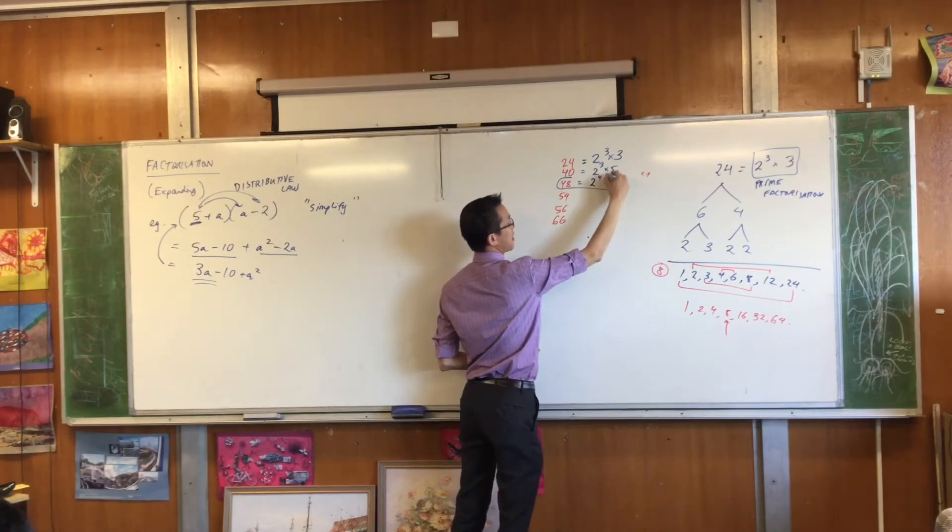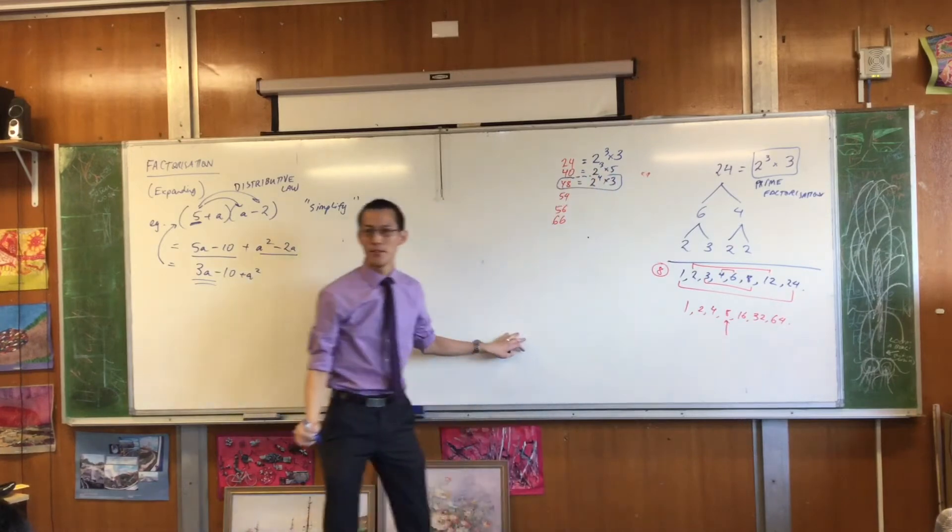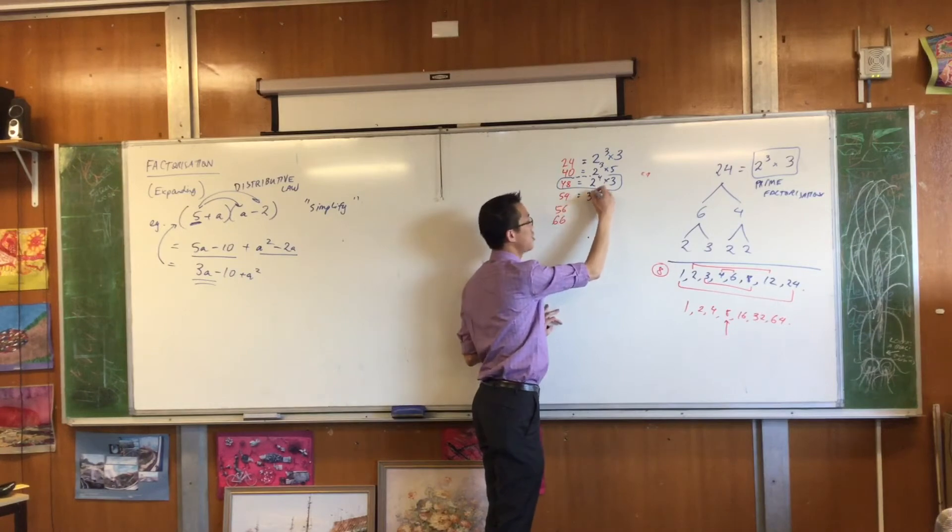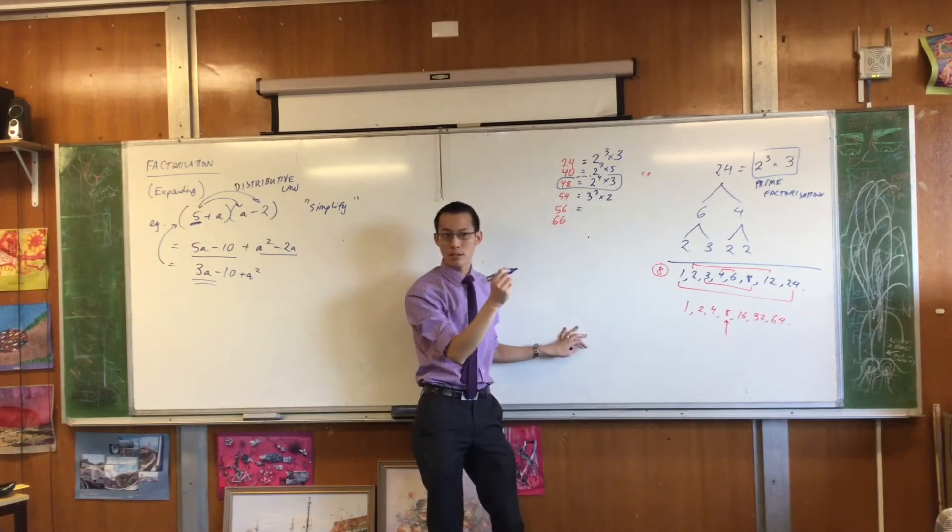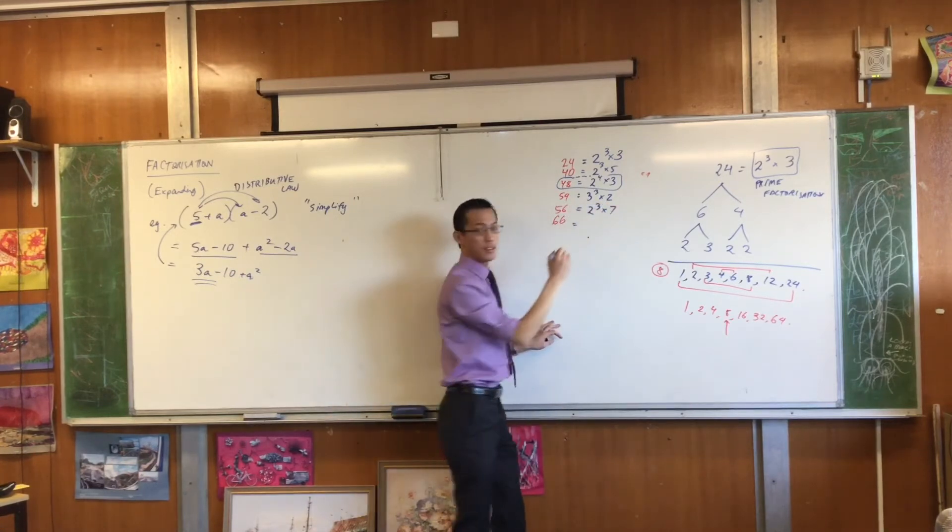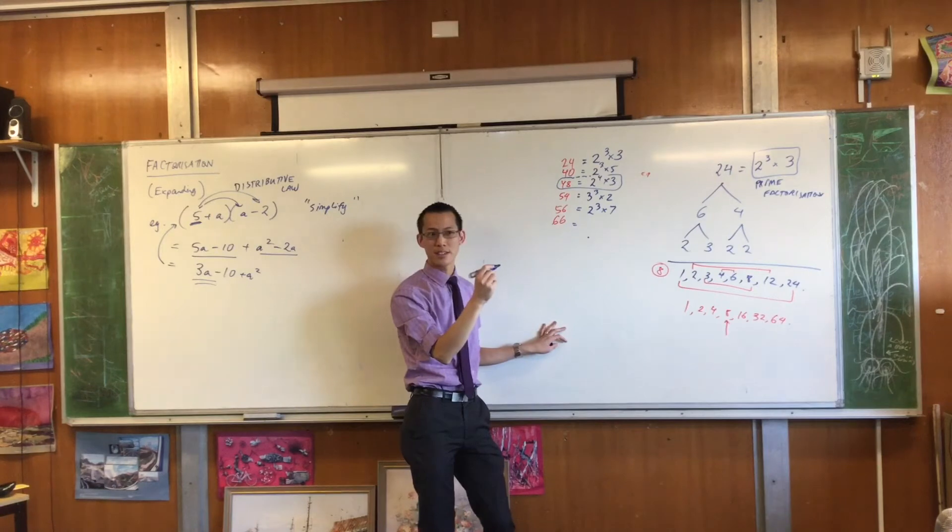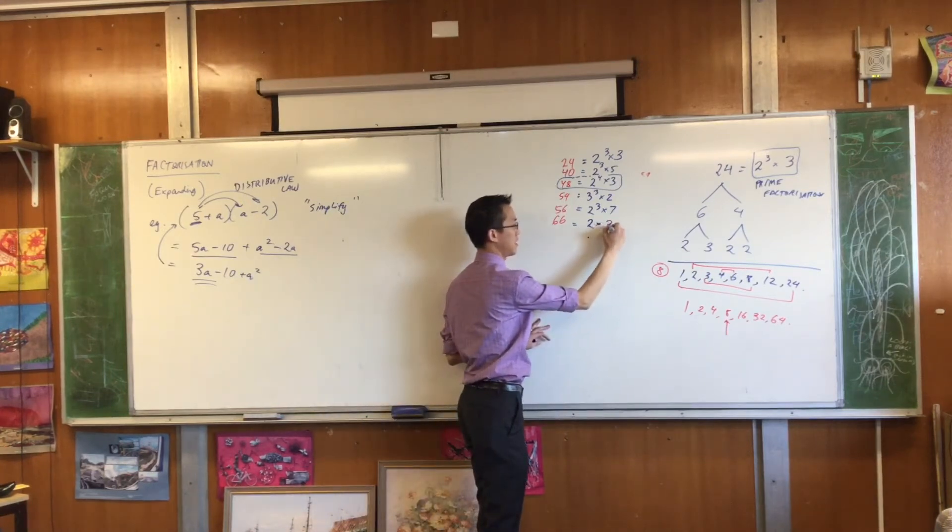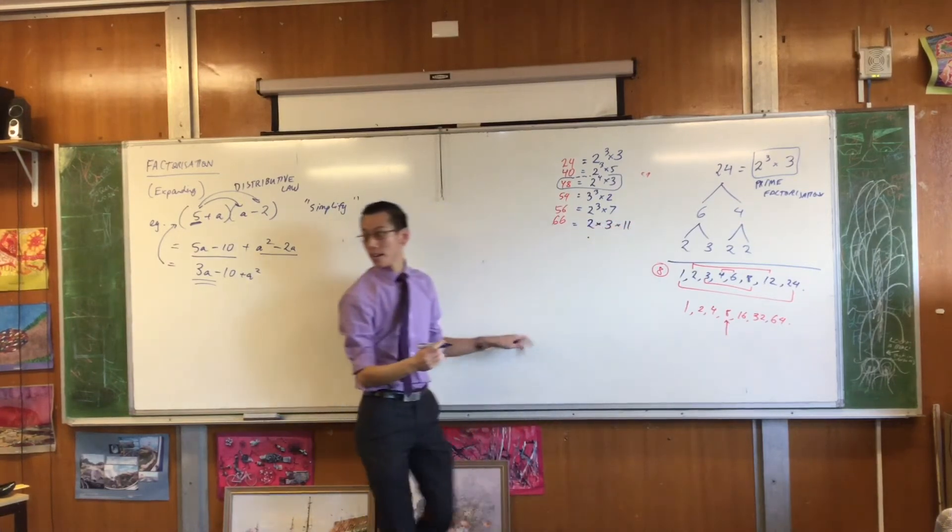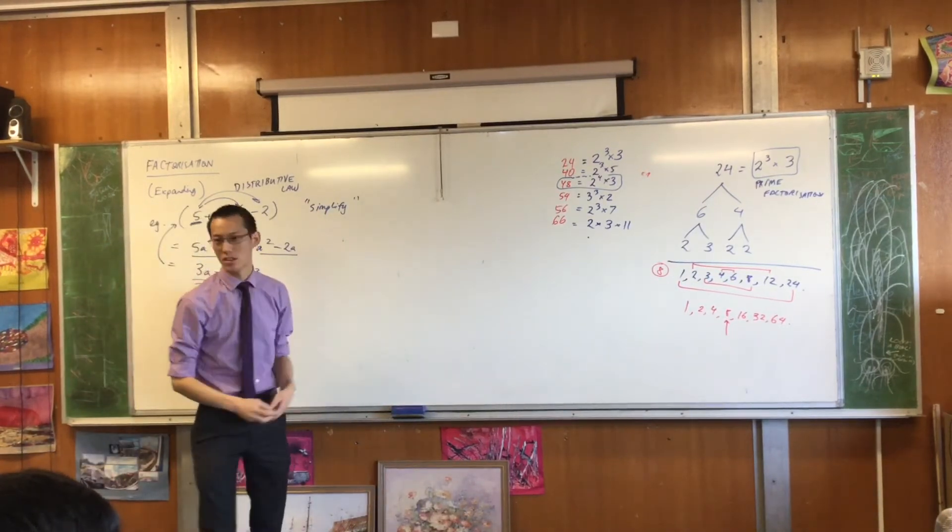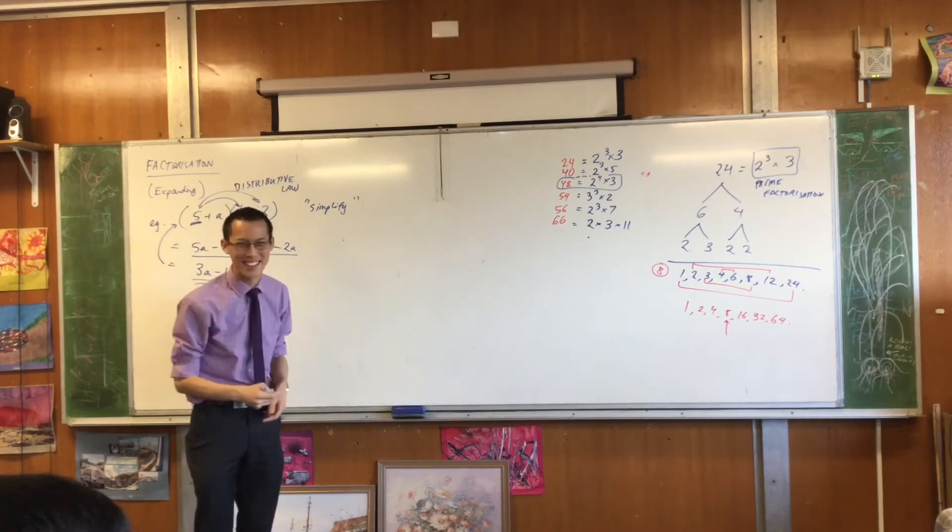We'll come back to this guy in a second, and why it's different. 54. 2 cubed times 2. Say it again. 3 cubed times 2. 56. 2 cubed times 7. And 66. Who has it? 2 times 3 times 1. 2 times 3. That's 6 times 11. Is that right? Okay. Leave 48 to one side for a second, because it has the wrong number of factors. We'll come back to it in a minute.